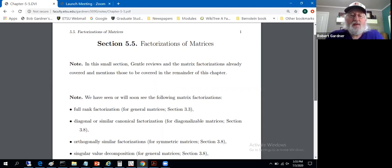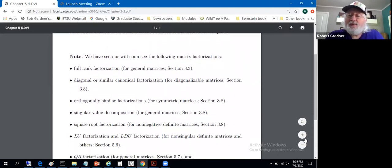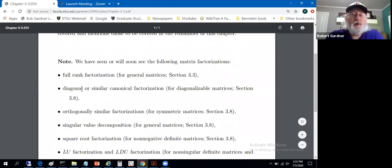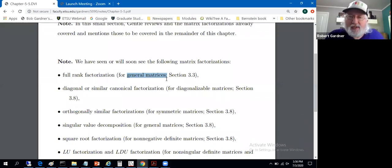We've seen in chapter three the following factorizations and I've given you the context in which these were done. When I say general matrices, there's no conditions on the matrix. It doesn't have to be square in particular, and sometimes there are some constraints on these matrices.